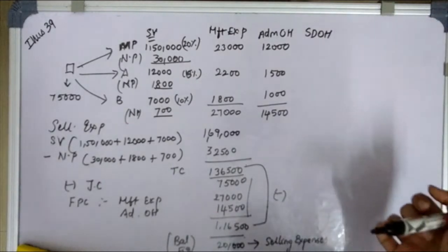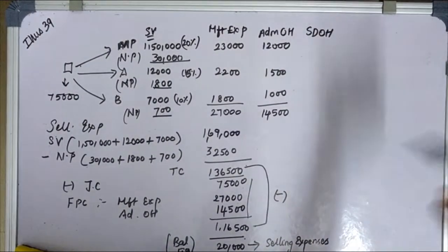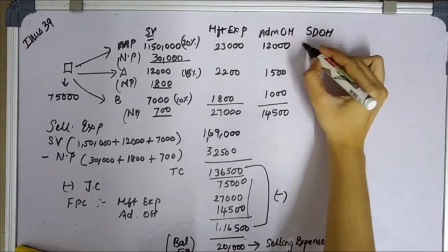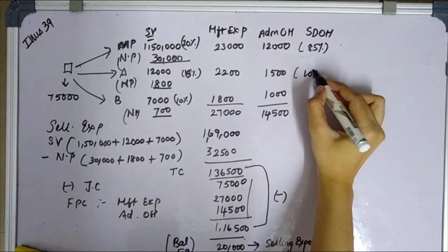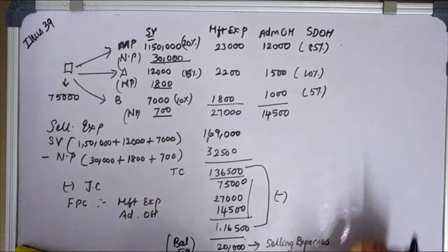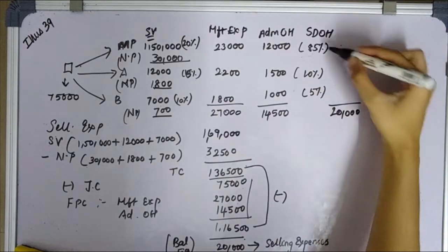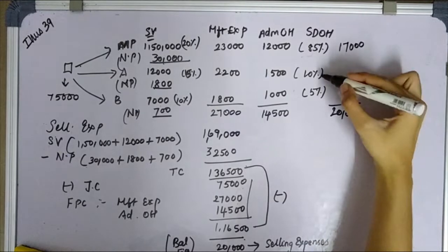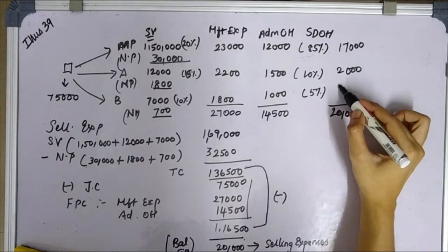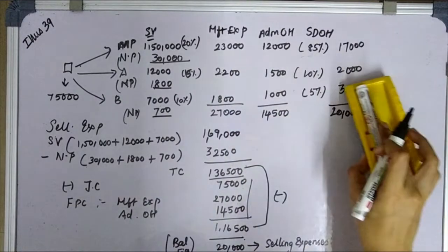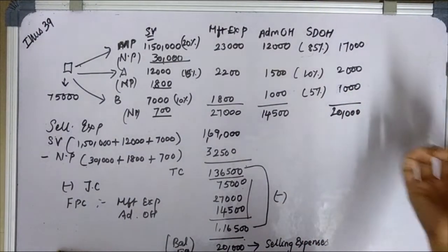The selling and distribution amount is 20,000, distributed by percentage. For the main product, 85% of 20,000 gives 17,000. For by-product A, 10% of 20,000 gives 2,000. For by-product B, 5% of 20,000 gives 1,000. The amounts add up to 20,000 total.